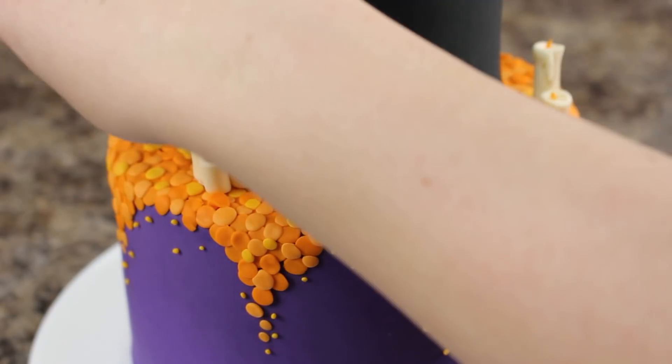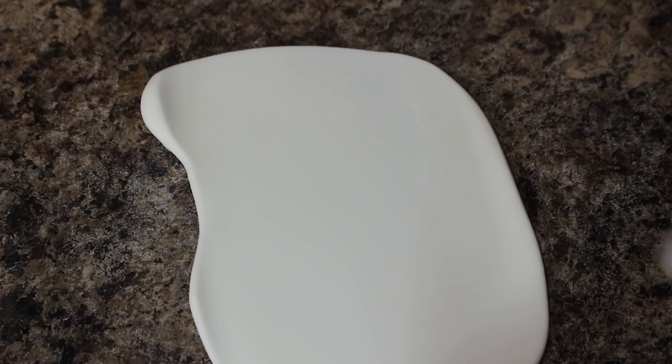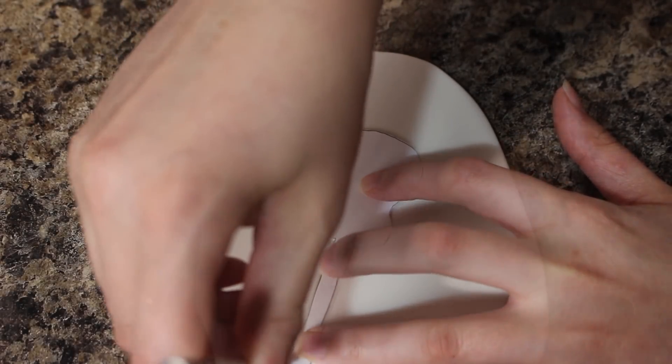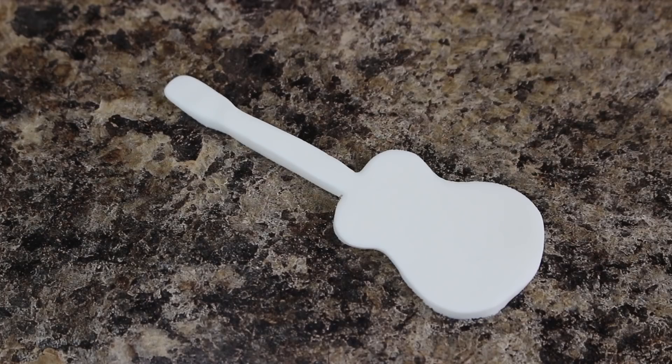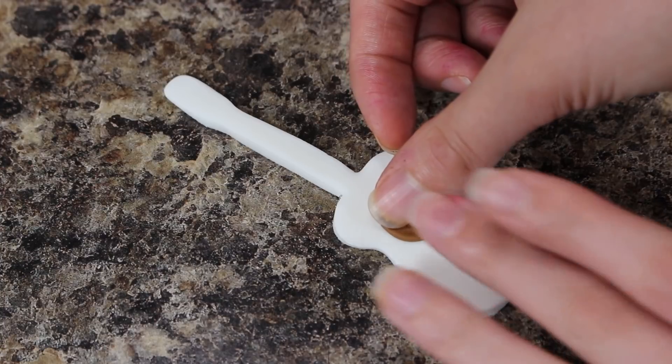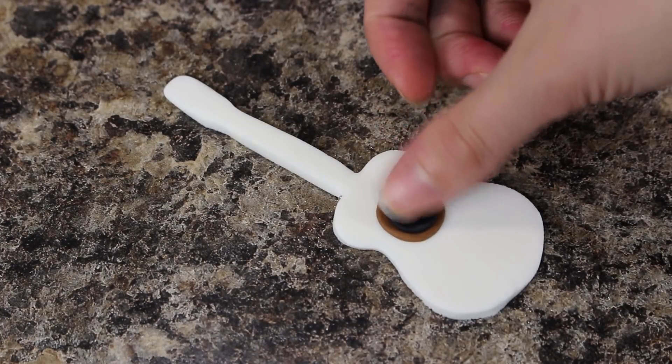To make the guitar that sits on top, I have this template that I used that I will link below and I rolled out some white fondant that I added a little bit of Tylose powder to fairly thick and then cut out the shape using my exacto knife. I added a circle of brown fondant for the center of the guitar and then added another circle of black fondant on top of that.